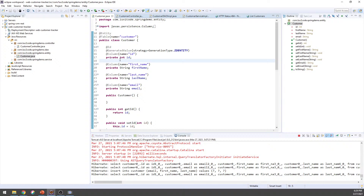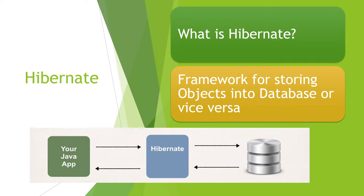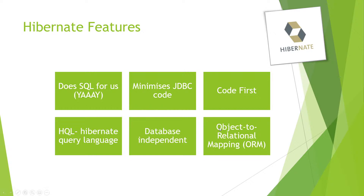Now that I've shown you what a controller is, we're going to go back and speak a little bit about connecting to the database and the architecture, and then we'll come back and explain the whole code. Now we're going to talk about Hibernate. What is Hibernate? Hibernate is a framework for Java — it's a free, open source framework. Anybody can use it. It's a framework for storing objects into a database, or vice versa. You have your Java app on one end, Hibernate in the middle as a framework, and the database on the other end.